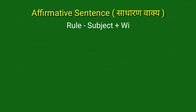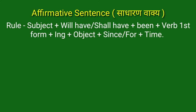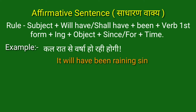Next is the affirmative sentence — साधारण वाक्य। For making this sentence, we use: Subject + will have / shall have + been + verb first form + ing + object + since/for. For example: कल रात से वर्षा हो रही होगी। — It will have been raining since last night. इस वाक्य में 'it' हमारा subject है, 'will have been' helping verb है, 'raining' verb की first form + ing है, बाकी हमारा object है।